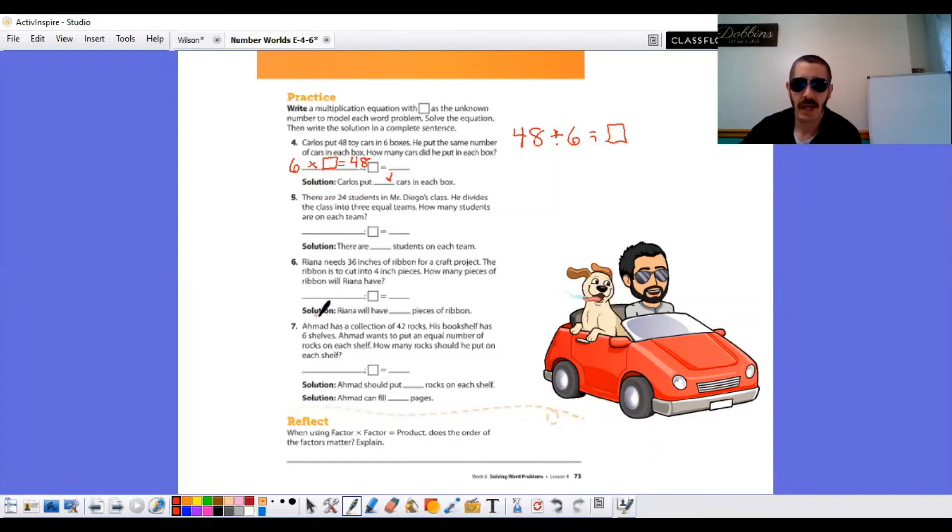And do five, six, seven. Reflect says when using factor times factor equals product, does the order of the factors matter? So what they're saying is if I took this, does it matter if I put the six here or the six here? No, that doesn't matter. But what does matter is understanding that 48 was our total and that that belongs over here in the product, that it's not a factor. That your quotient or your total is over here is our product or our total and our multiplication problem. Six is one of our factors. The unknown is our other factor. It does not matter if the six is here or if the six is there, you'll still get up with the same answer.